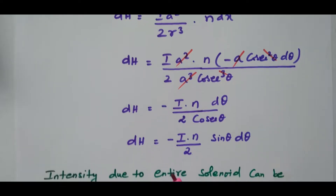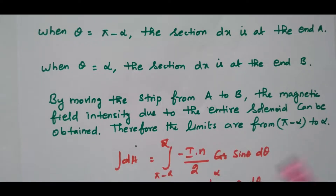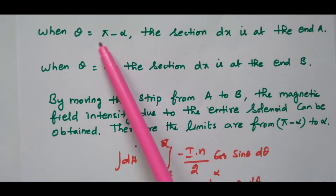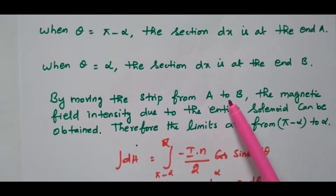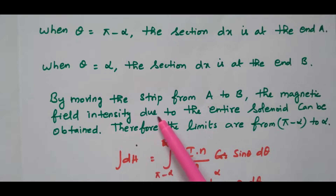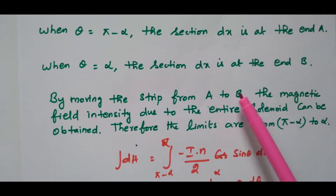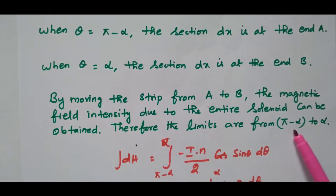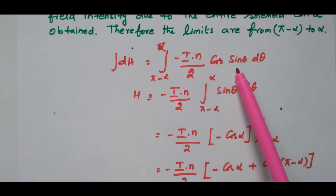By integrating dH we will get the total magnetic field intensity due to the entire solenoid. The limits of integration correspond to moving the strip from A to B: at end A the angle is pi minus alpha, and at end B the angle is alpha. Therefore, H = ∫(π−α to α) −(I·n/2)·sin θ·dθ.